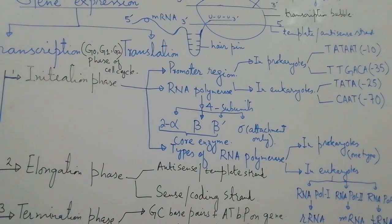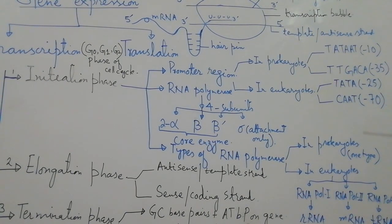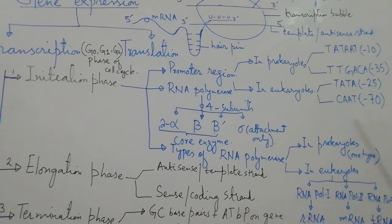The names of these sequences — -10, -35, -25, and -70 — refer to their positions: they are located before the initiation site of the gene.